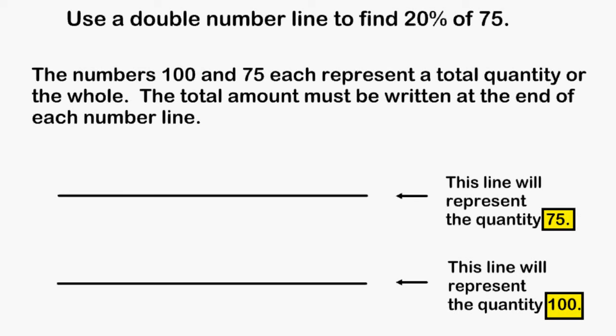Because 75 and 100 are respectively the total of each amount, we must put that total at the end of each of our number lines. So for the first line we are going to write 75 at the end, and at the end of the other number line we are going to write 100.